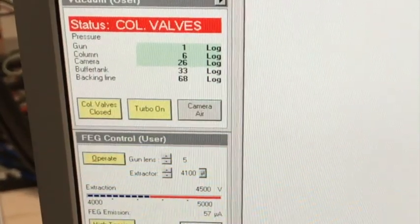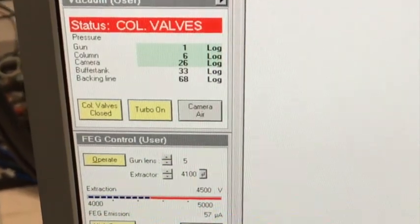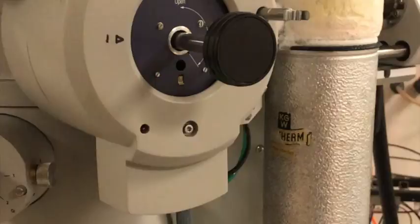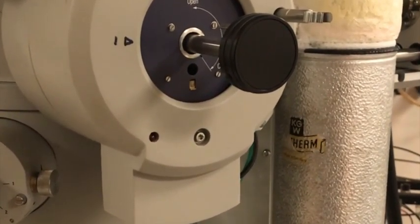You can see the timer disappeared from the screen and the turbo on button is active. Meanwhile, you will notice that the red light is turned off.